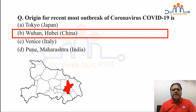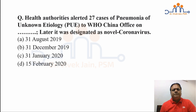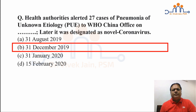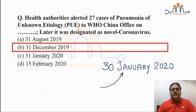On this fact is based our third question: health authorities alerted 27 cases of pneumonia of unknown etiology to the WHO China office on which date? That date was 31st of December 2019 — the last day of the year. Also remember 30th of January 2020, because it was on this date that this disease was declared a Public Health Emergency of International Concern (PHEIC).